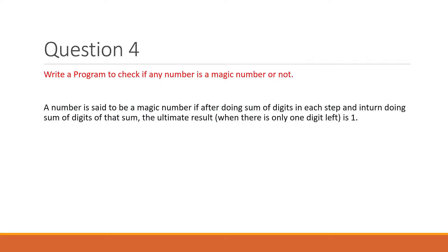The next question: check whether a number is a magic number. A magic number is one where you sum its digits repeatedly until a single digit remains, and that digit should be 1. For example, 100 → 1+0+0 = 1 (magic). For 1090 → 1+0+9+0 = 10 → 1+0 = 1 (magic). For 2090 → sum = 11 → 2, not 1, so not magic.